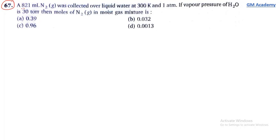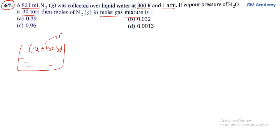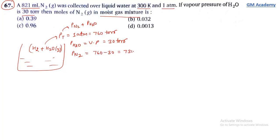Question 67: 21 ml nitrogen gas was collected over liquid water at 300 Kelvin and 1 atm (760 torr). Vapor pressure of H₂O is 30 torr. Total pressure = P(N₂) + P(H₂O), so P(N₂) = 760 - 30 = 730 torr.